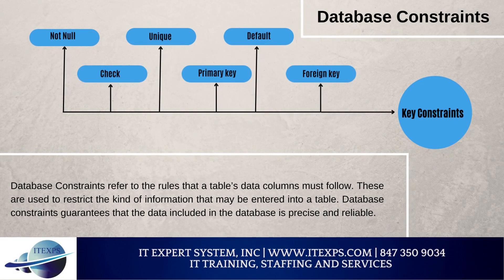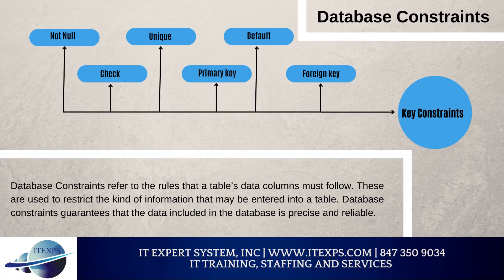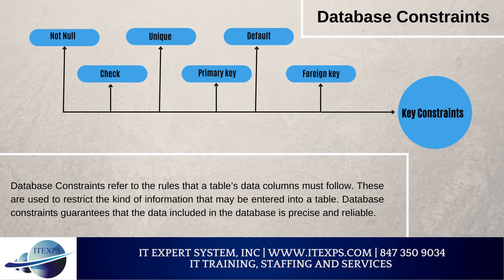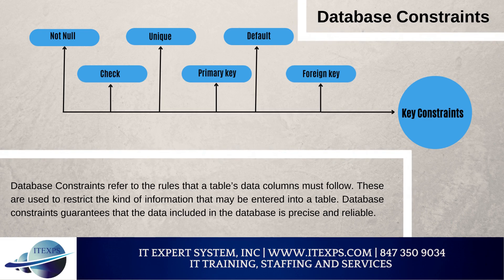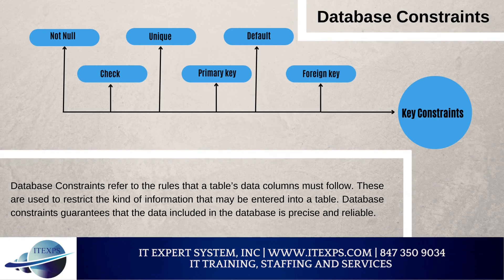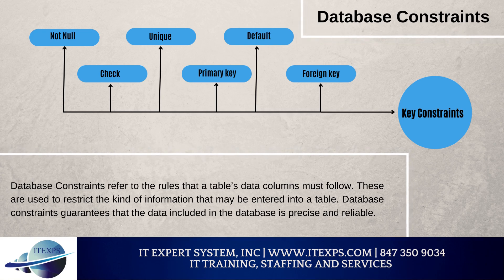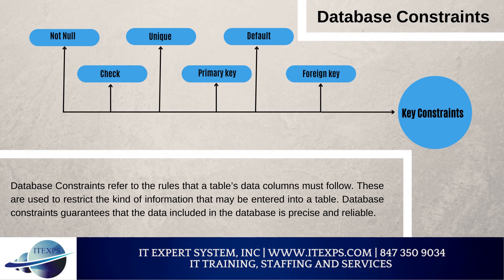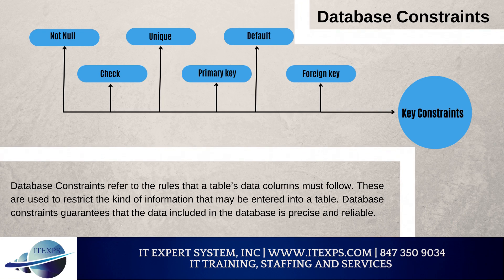What is Database Constraints? Database constraints refer to the rules that a table's data columns must follow. These are used to restrict the kind of information that may be entered into a table. Types of constraints: 1. Not Null — null values cannot be inserted into a column due to not-null requirements. 2. Unique — unique constraints ensure that the values in a set of columns are unique and not null. The columns must be declared as not null, and the database manager utilizes a unique index to guarantee the key's uniqueness during updates.